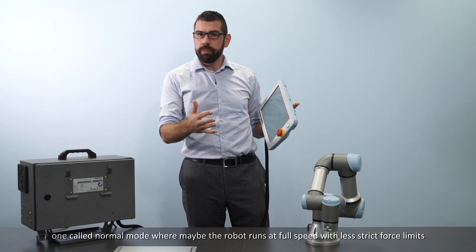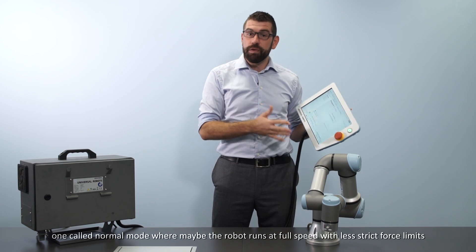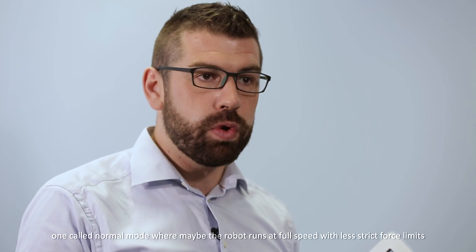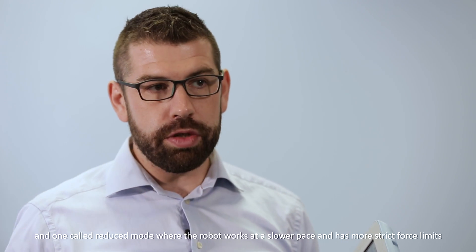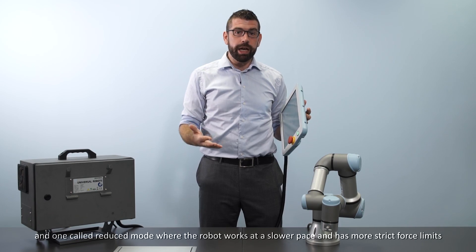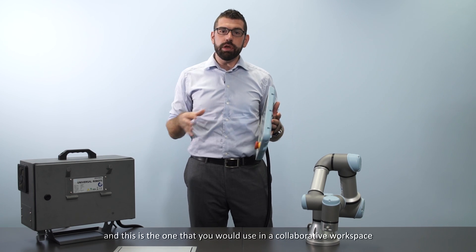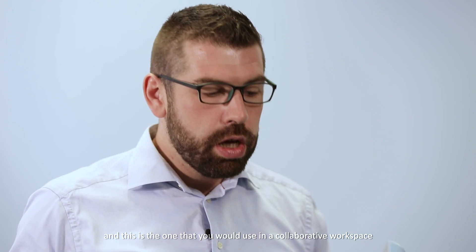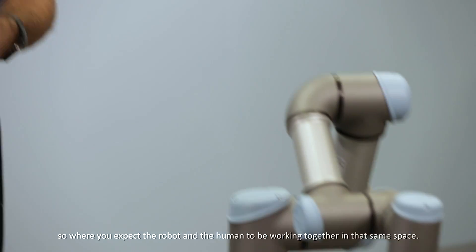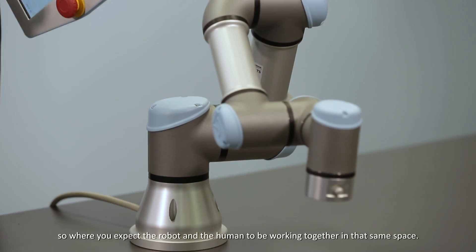One called normal mode, where maybe the robot runs at full speed with less strict force limits, and one called reduced mode where the robot works at a slower pace and has more strict force limits. And this is the one that you would use in a collaborative workspace, where you expect the robot and the human to be working together in that same space.